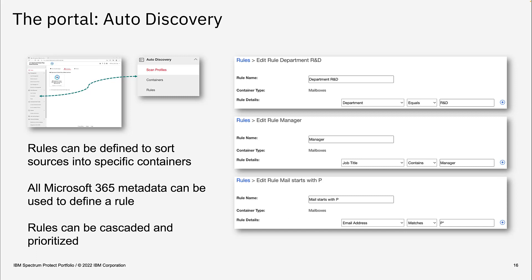The rule name should help you understand what the rule does. As shown on the top right, I used the department R&D name for my first rule. Then you specify the rule details — for example, the department should equal the name R&D. The metadata options available for rules come from all the metadata provided by Microsoft for each object type, which differs between Teams, SharePoint, and mailboxes.